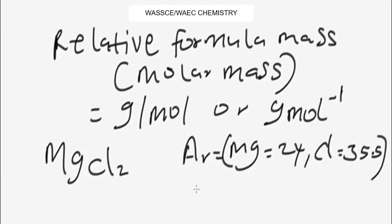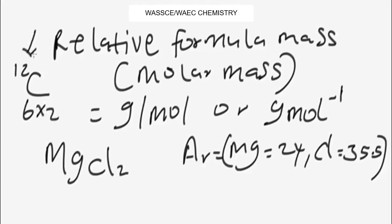Now that we have the relative atomic masses of these elements, we can find the relative formula mass or molar mass of magnesium chloride. Note that you need to know the relative atomic mass of elements. The relative atomic mass is the same thing as the mass number. For instance, for carbon, the mass number is 12, so the relative atomic mass is 12.